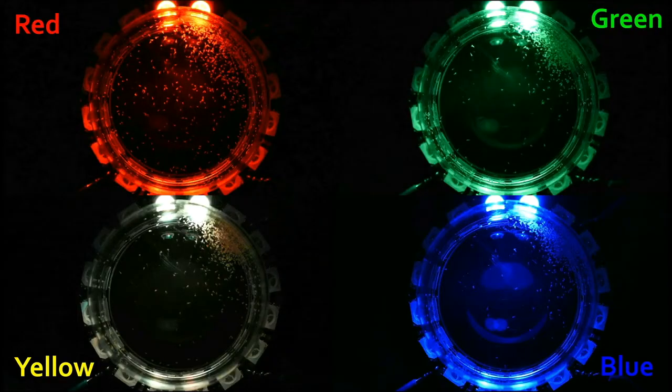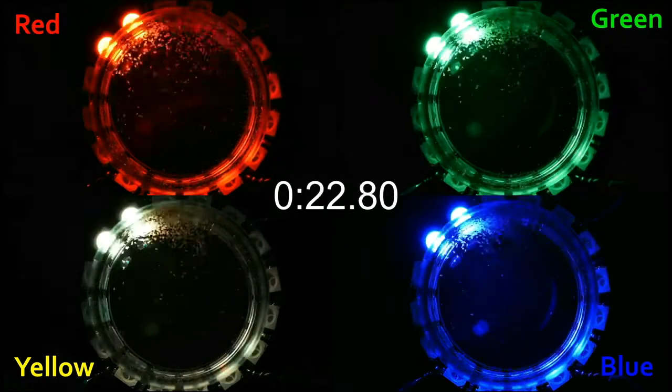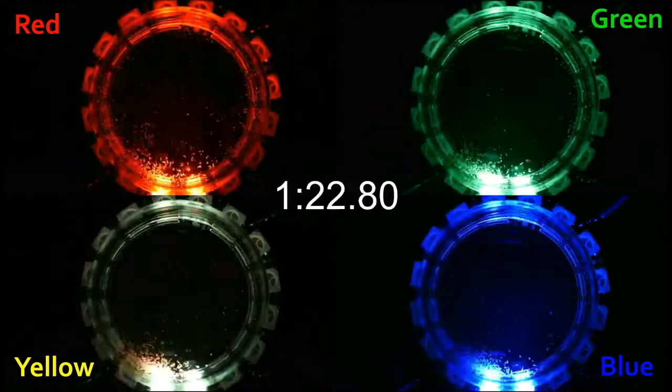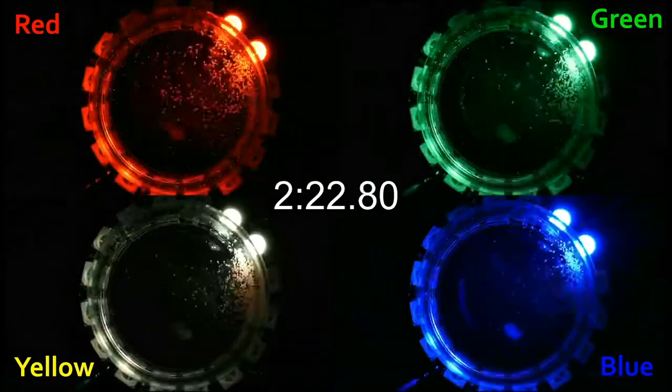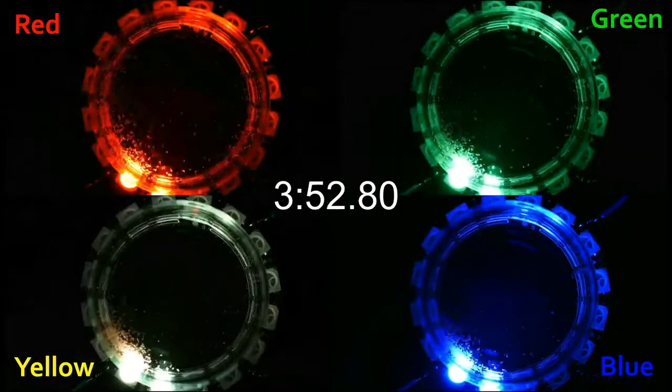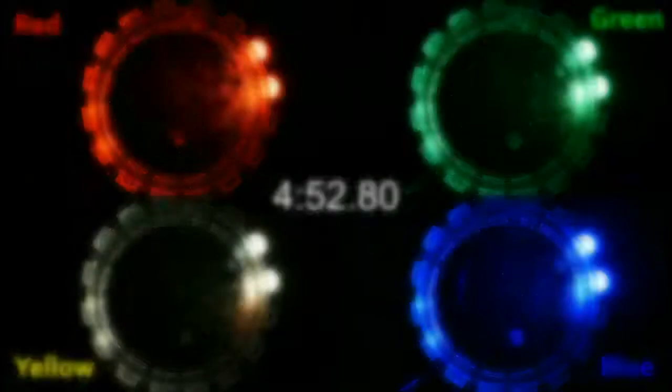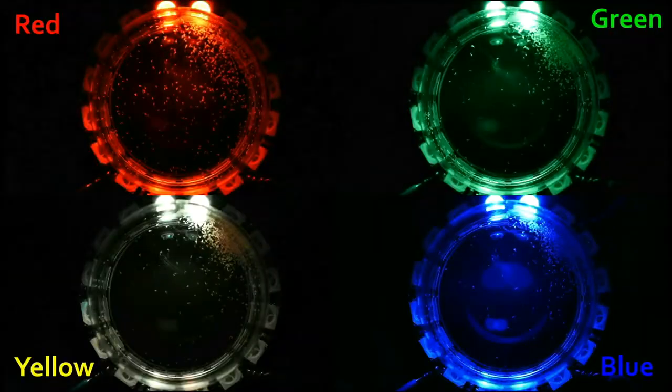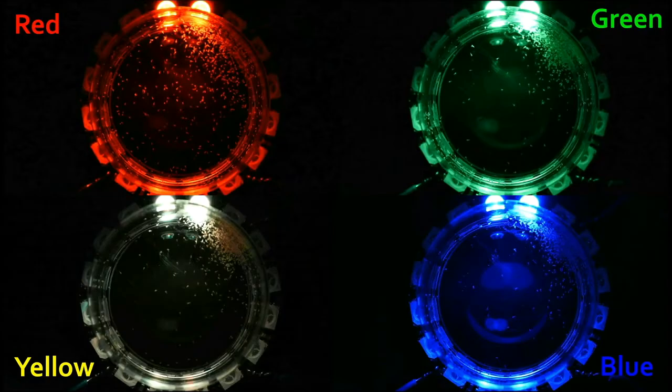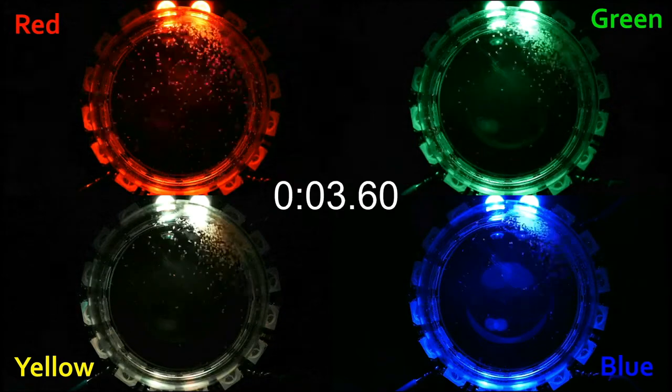But can they see different colours? Let's try with red, green, blue and yellow light. They seem to follow all colours. Is there a difference in how they react to each colour?